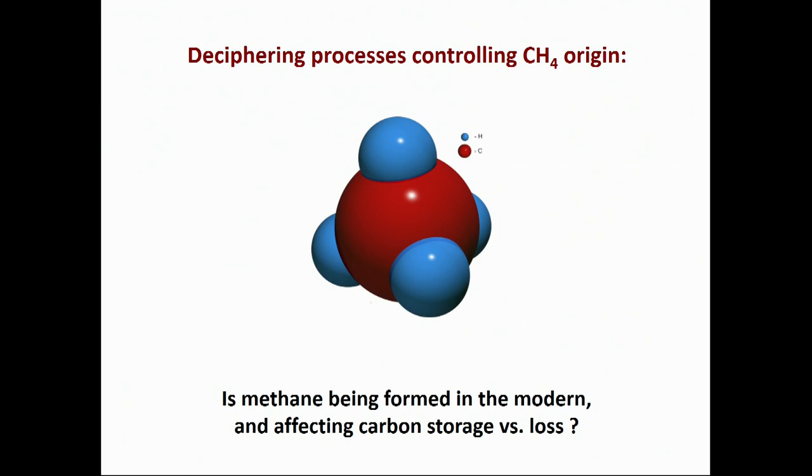We need to ask: is there actually methane being formed in the modern? What are some of the processes potentially controlling the storage of carbon in the system — not just as methane, but in the diversity of forms discussed so far, including reduced organic carbon forms, carbonate and other phases versus loss? That is part of the overarching context of what we're trying to answer.